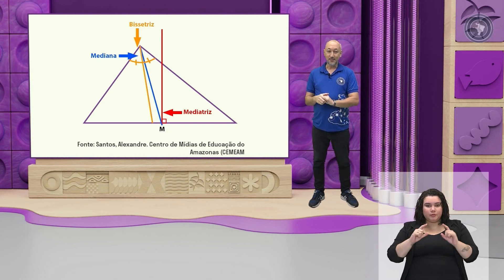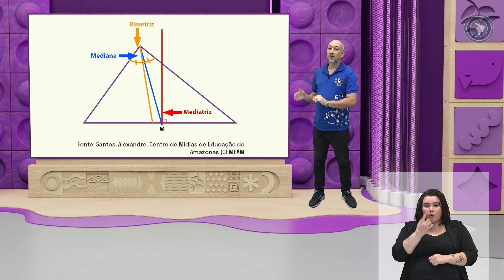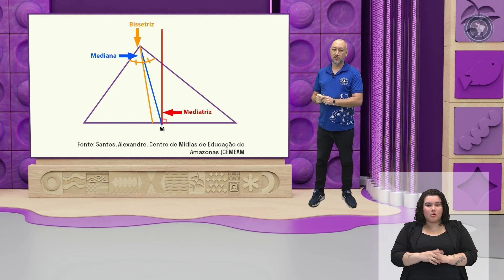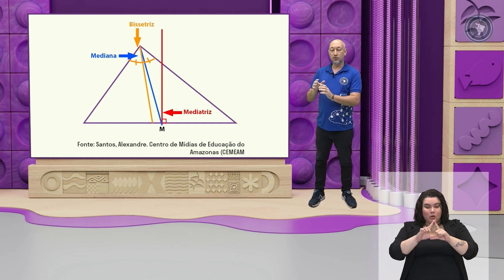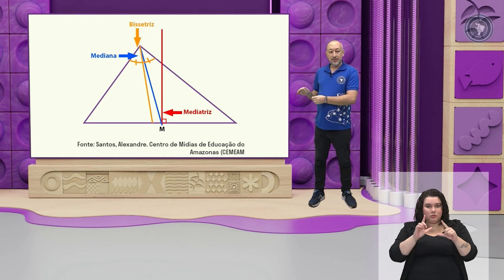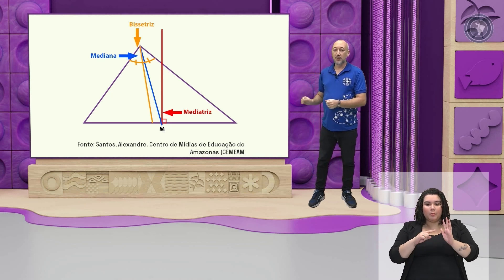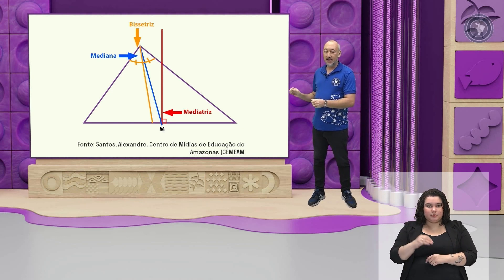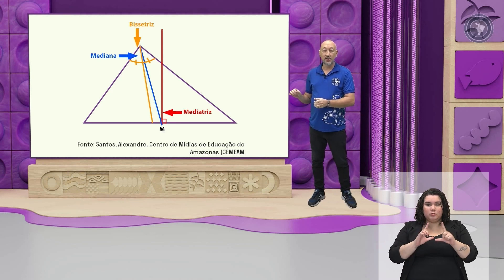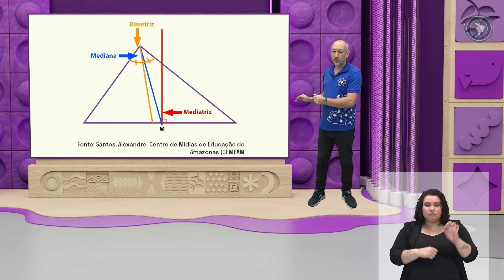Nós temos aqui, de vermelho, o nome Mediatriz. Reparem que ela está de vermelho. Tem aquele símbolo muito conhecido, significa que ela está formando aqui com a base do triângulo um ângulo de 90 graus. Então ela está perpendicular a esse segmento, que é a base do triângulo. E ela está bem num ponto que tem a letra M — ele é o ponto médio, bem no meio desse segmento que é a base do triângulo.